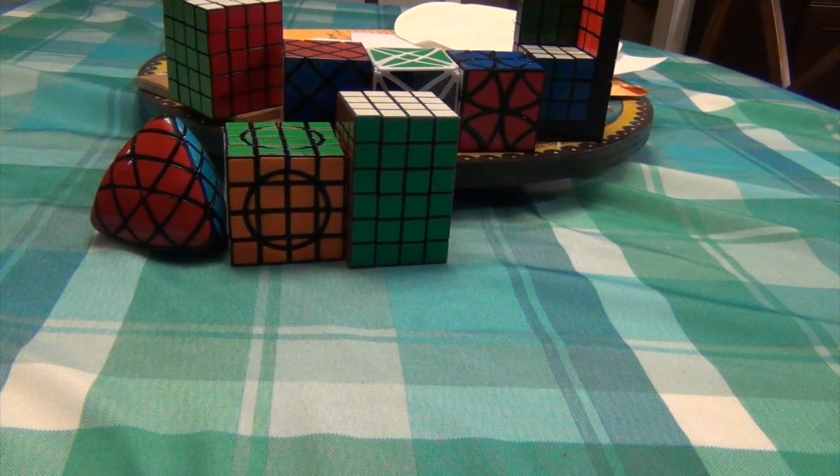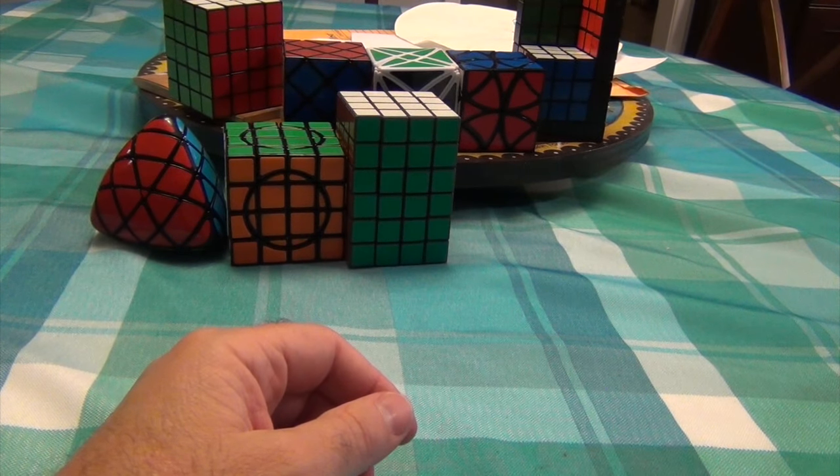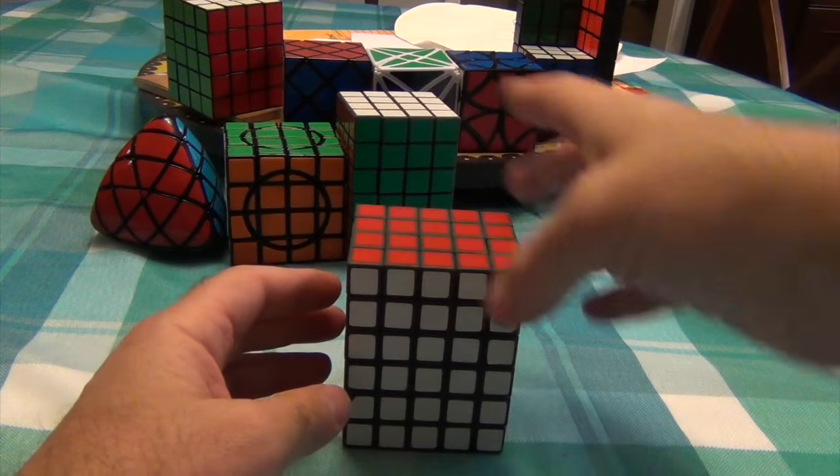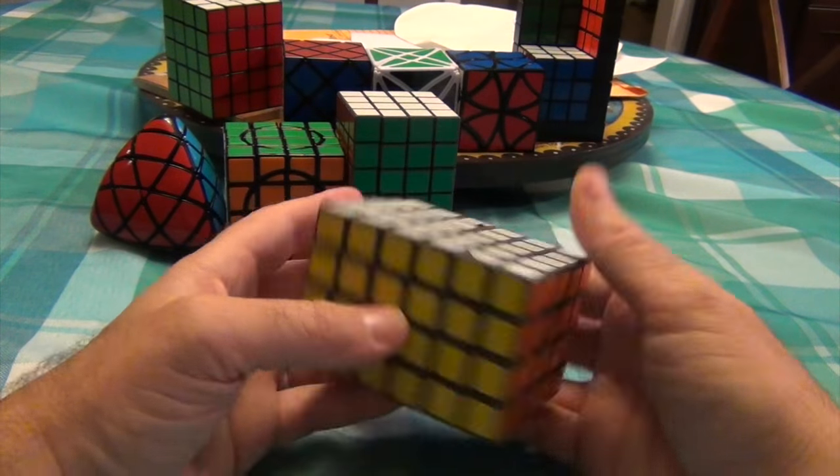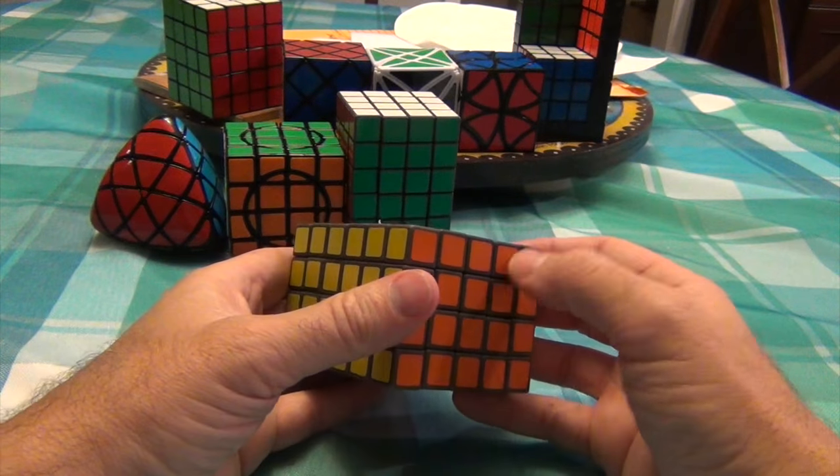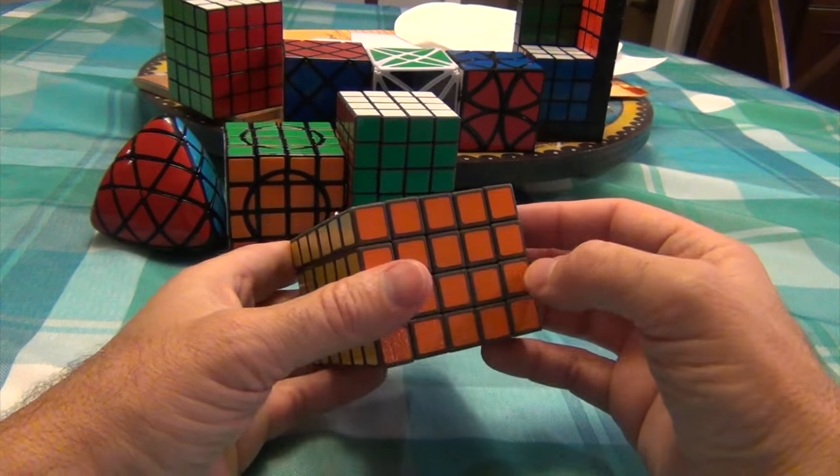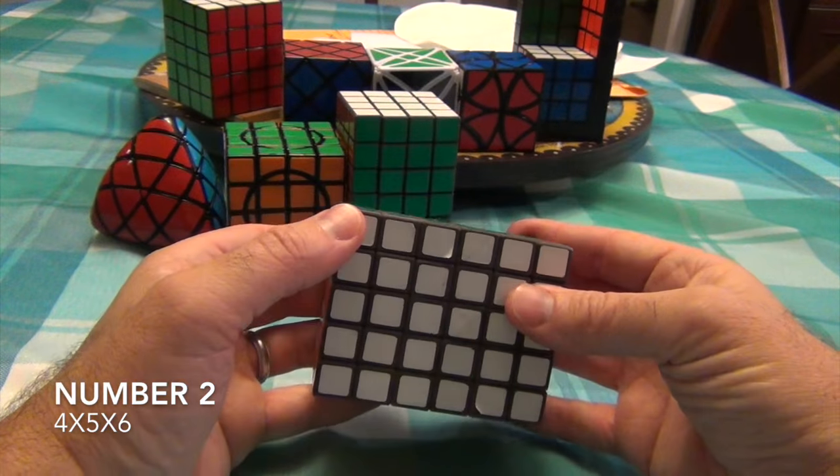So number two, once again, we turn to the cuboids and we turn to Tom Z, and that's going to be this guy over here. This is the 4x5x6.